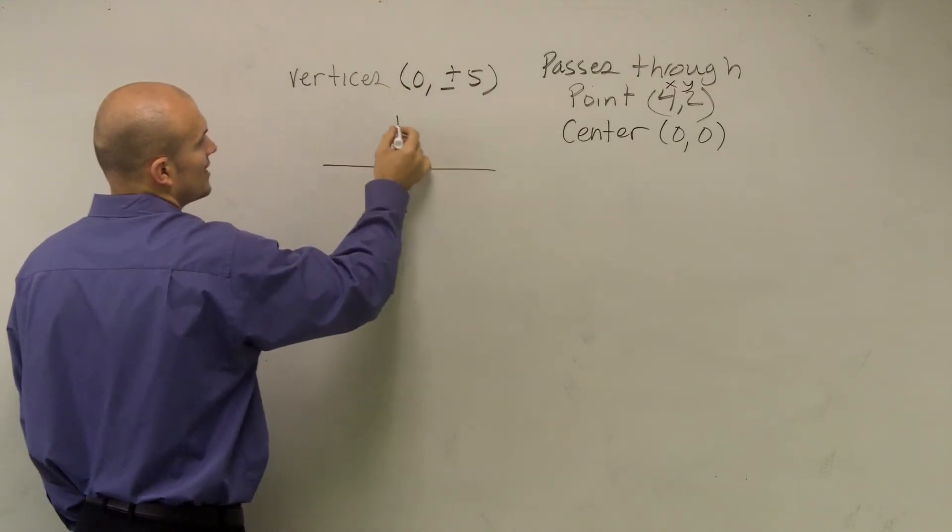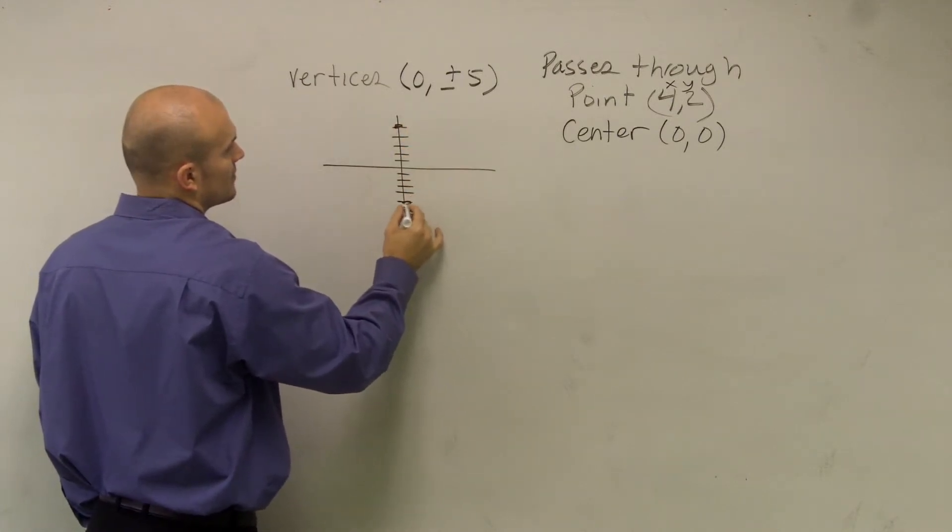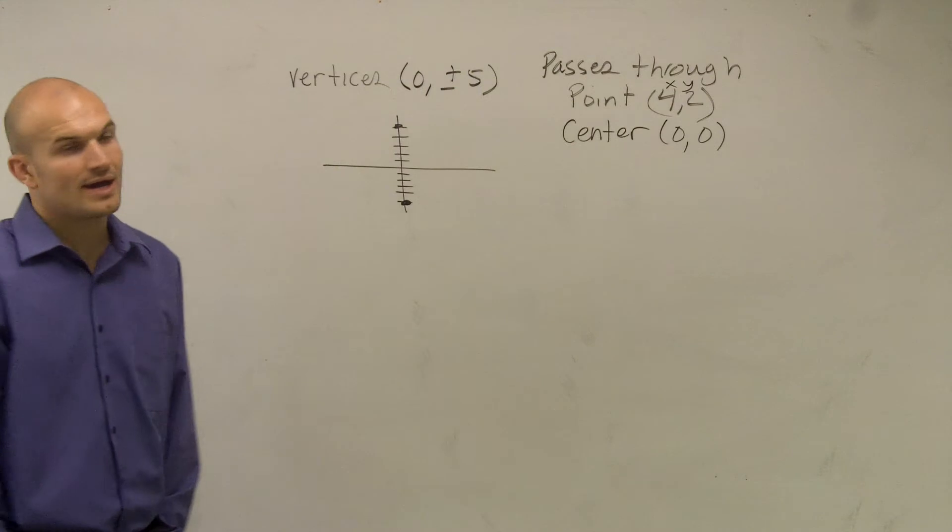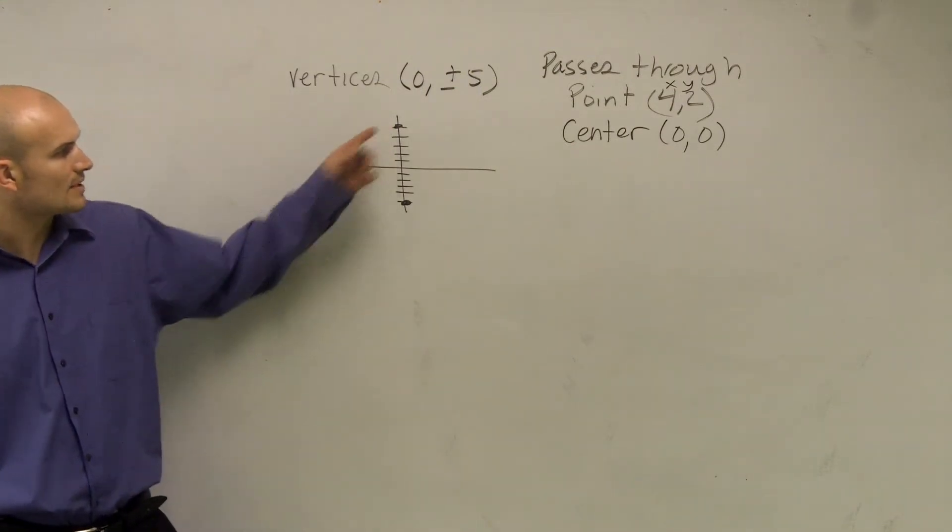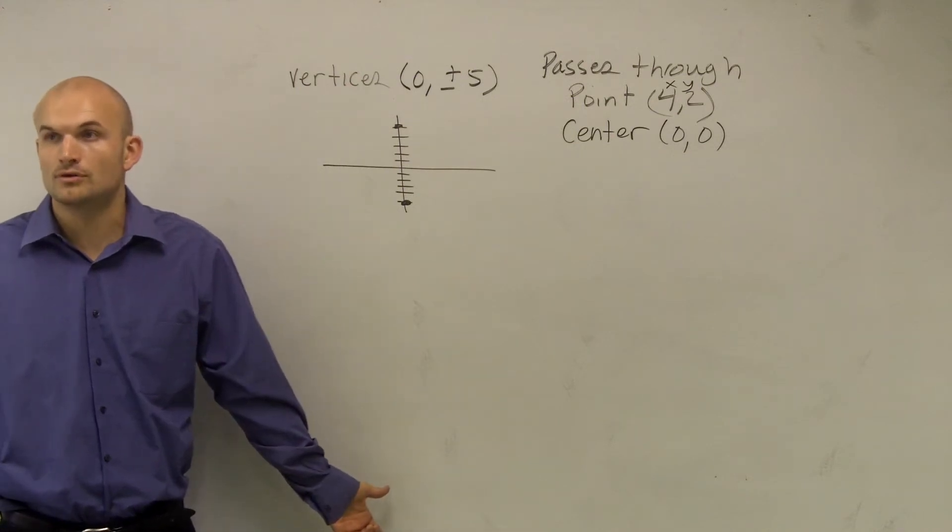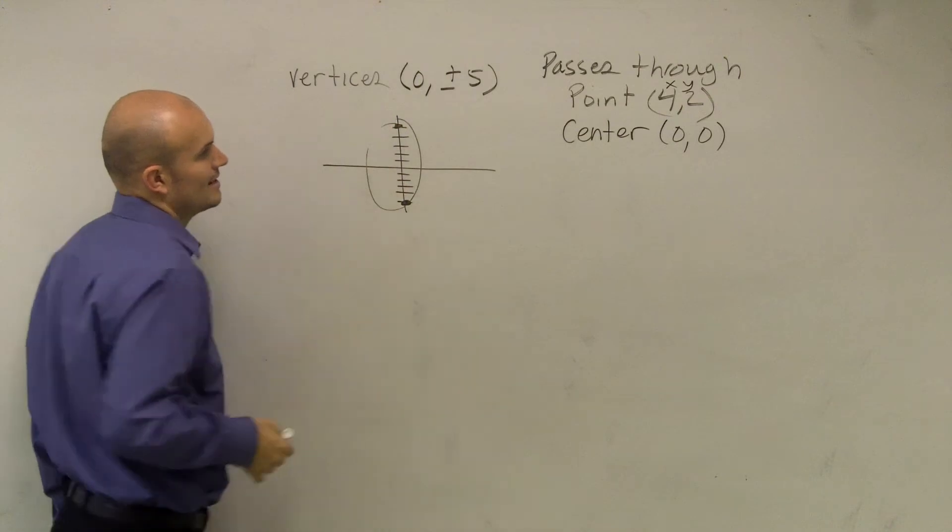1, 2, 3, 4, 5, and (0, -5): 1, 2, 3, 4, 5. I know that I have a vertical major axis, right? So it's going to look something like that.